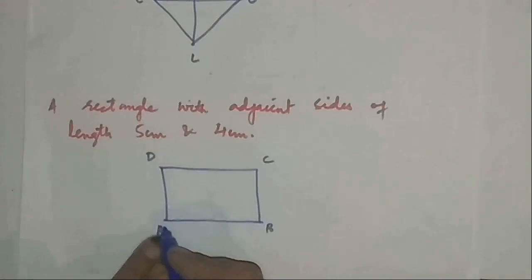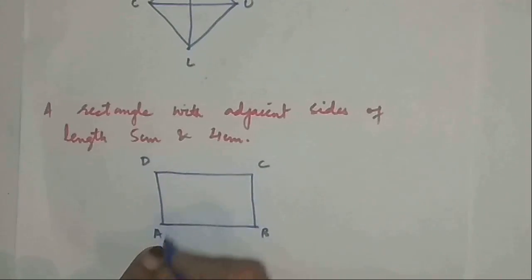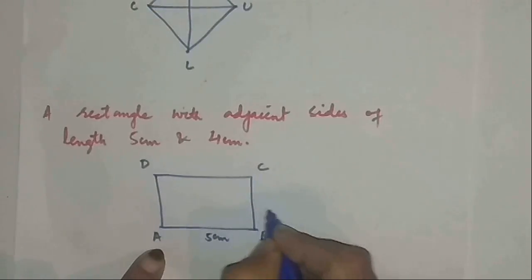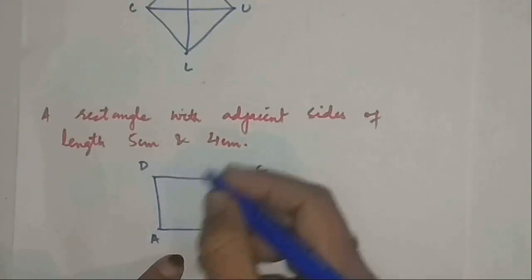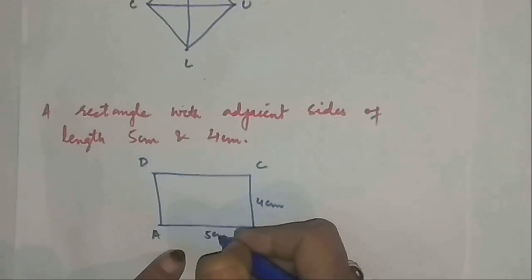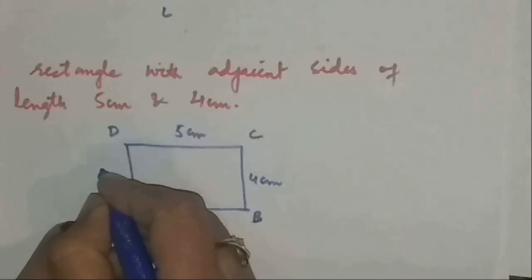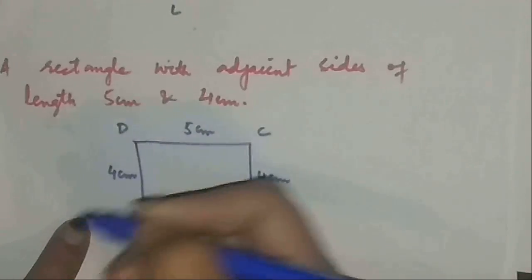Here what is given is adjacent sides are 5 and 4. If this is 5, this is 4. We know the properties again that the opposite sides are always equal. If this is 5, this will also be 5, and if this is 4, this will also be 4 centimeters. And one more property of rectangle: each angle is a 90-degree angle.